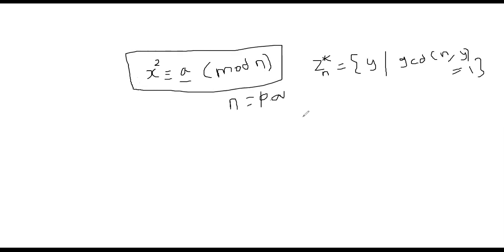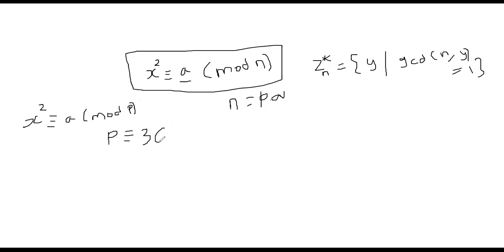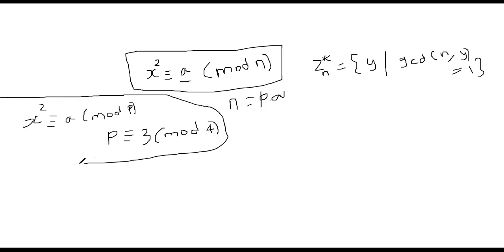In the previous segment we solved the same problem but assumed x² ≡ a mod P where P is a prime. In this segment we will talk about finding a solution to the square root problem in the context of a composite group. We made the additional assumption that if P is 3 mod 4, the problem is much easier to solve. We will continue that assumption: both P and Q are congruent to 3 mod 4.